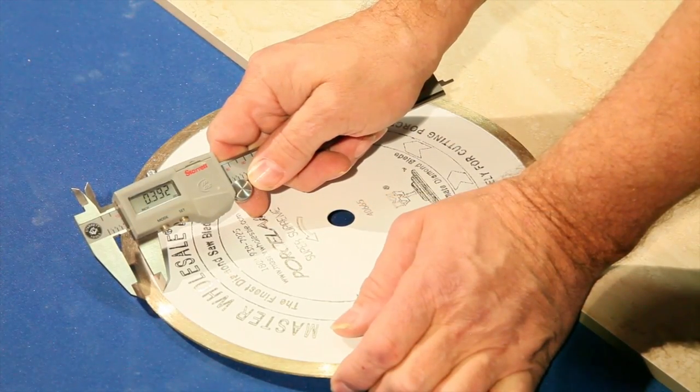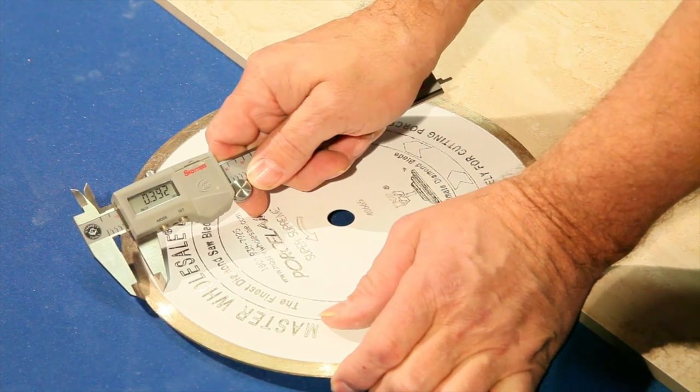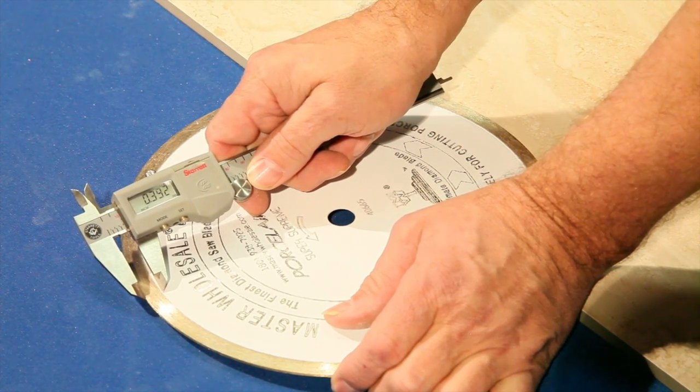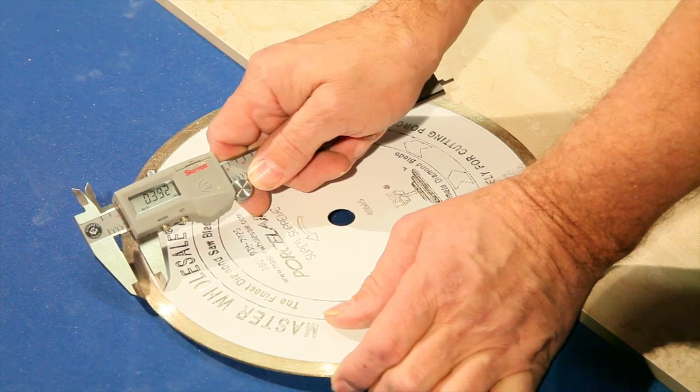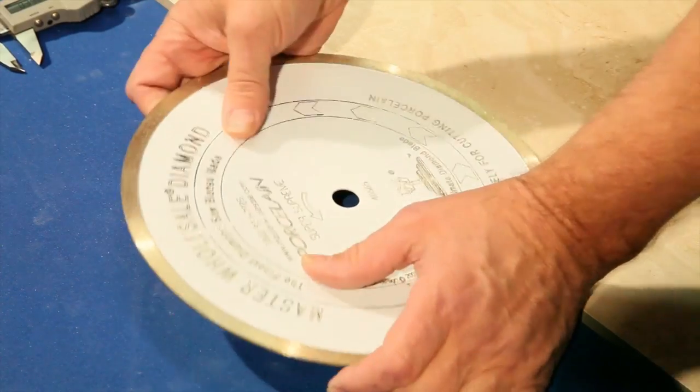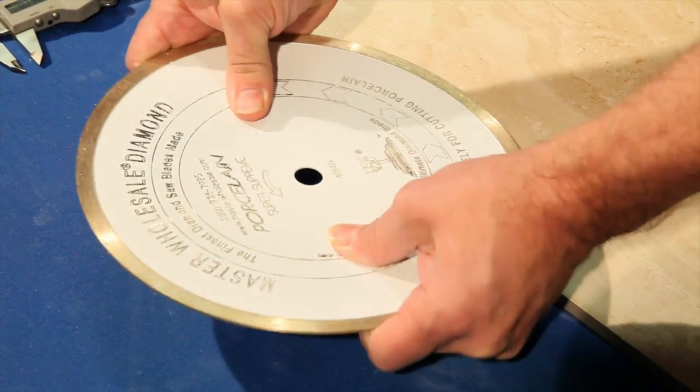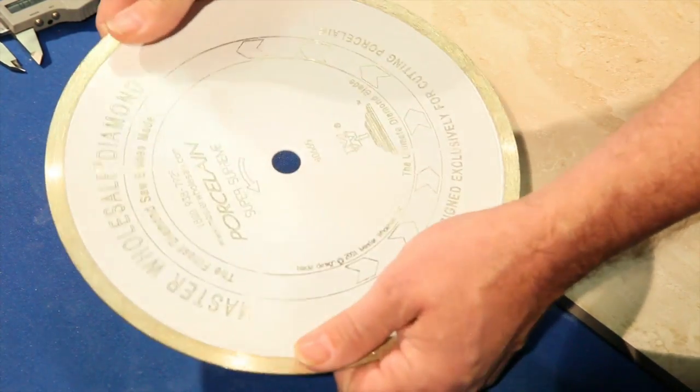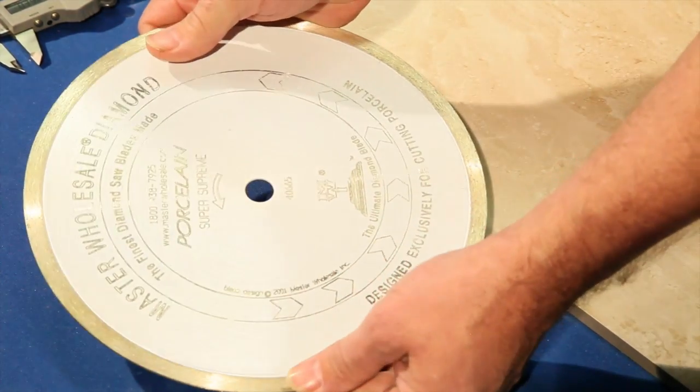Master Wholesale porcelain blade. This blade's made in Japan. It's very high quality. It's got a 0.39 diamond height which is really good. It's also a little bit thicker core. It doesn't have a lot of flex, which you know flex when cutting hard material is a bad thing.